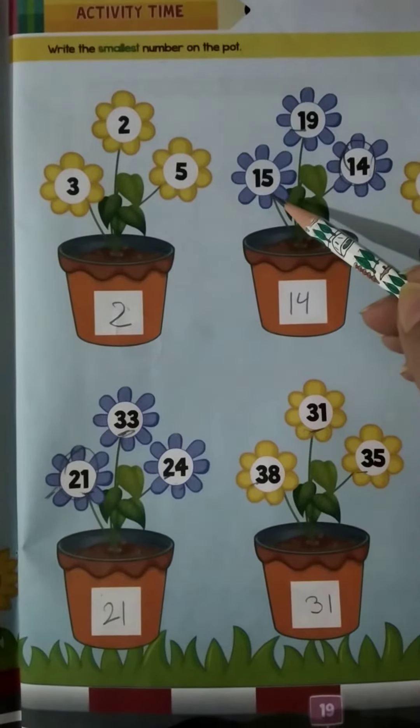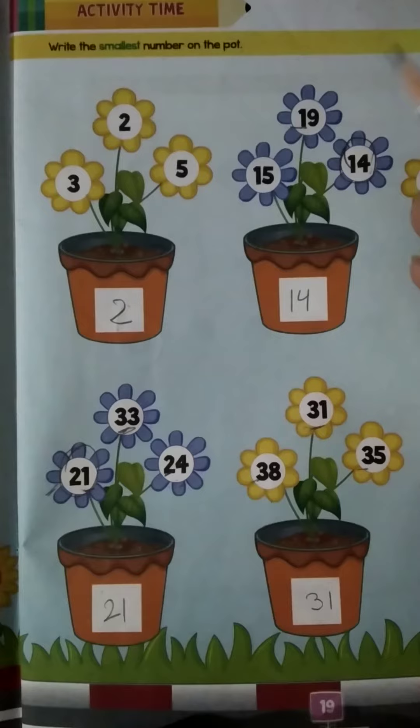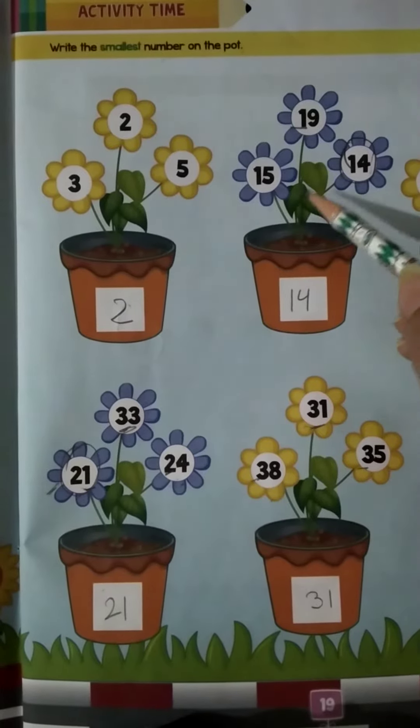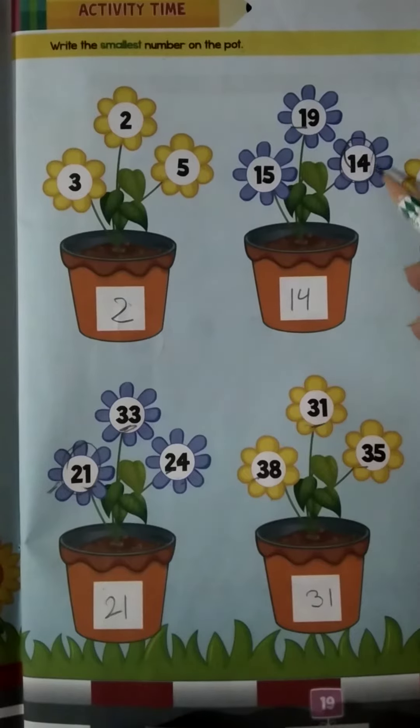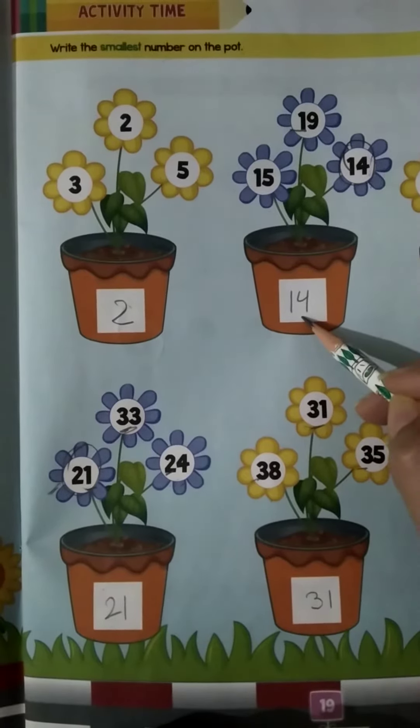Jou number sabse pahle aata hai counting me, woh chota hotta hai. Urus ke baad joh number aata hai, woh chota hotta hai. Now here we have 15, 19, 14. Toh sabse small koun hai? Sabse pahle koun aata hai? 14.